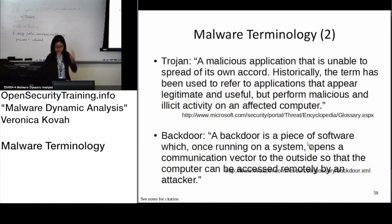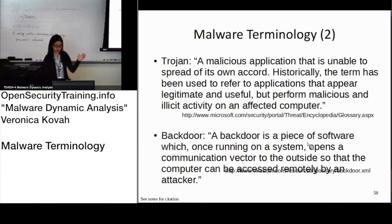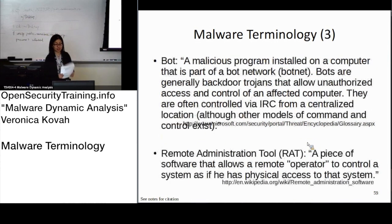Slide 58 covers what's between Trojan and backdoor. A Trojan is software that mimics something else. For example, maybe the malware just acts like a calculator, but in reality it's not. That's a Trojan. A backdoor type of malware actually opens some ports — opens up a way into your infected machine for the attacker to control it.